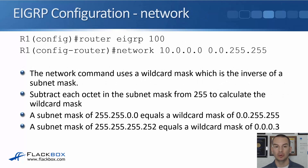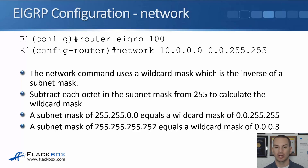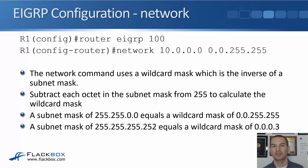After enabling EIGRP globally with 'router eigrp' and the AS number, the next command is the network command. This specifies which interfaces are going to participate in EIGRP. The network mask uses a wildcard mask, which is the inverse of a subnet mask. To calculate the wildcard mask, subtract each octet in the subnet mask from 255. For example, a subnet mask of 255.255.0.0 equals a wildcard mask of 0.0.255.255. A subnet mask of 255.255.255.252 equals a wildcard mask of 0.0.0.3, because 255 minus 252 is 3.